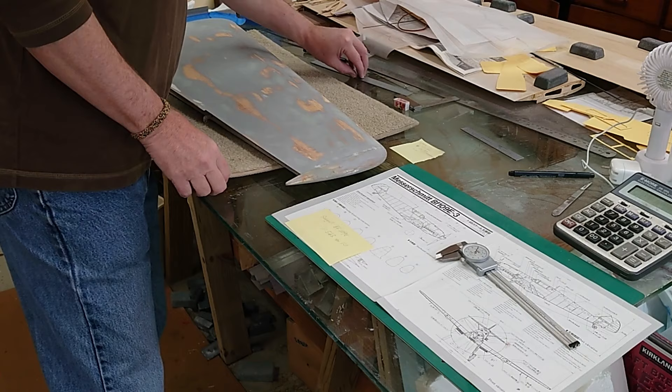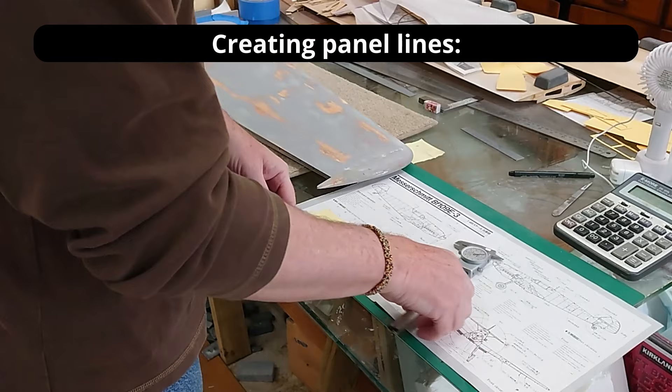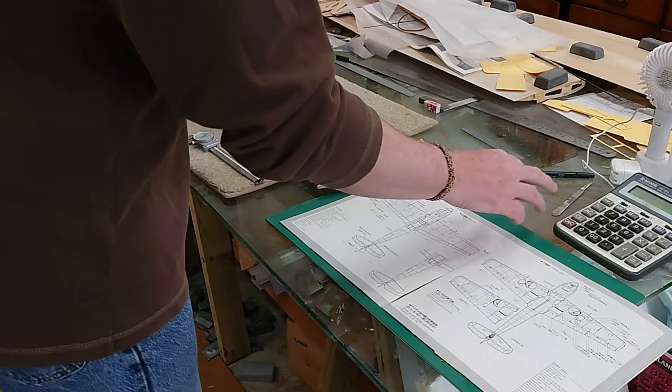Detailing on the fuselage is almost done, so it's time to start on the wing. Time to start looking at things like panel lines and inspection covers. Simulate the slats. I'm not actually making slats, just simulating that.